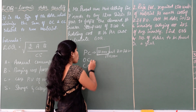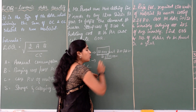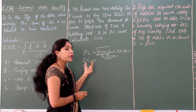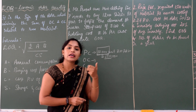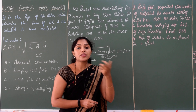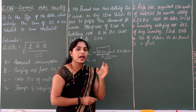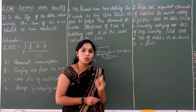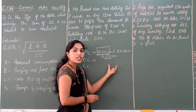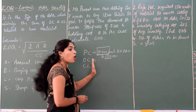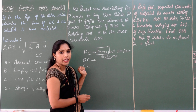Ordering cost is incurred in addition to the purchasing cost. Before placing an order, the company incurs delivery charges, inspection charges, examination charges, and telephone charges. The higher the quantity or purchasing cost, the higher the ordering cost will be.